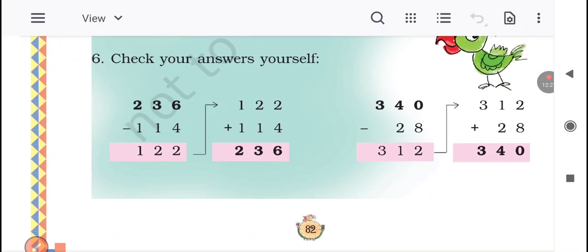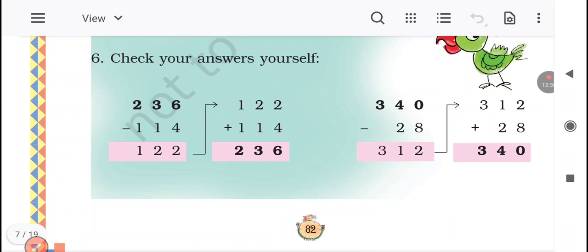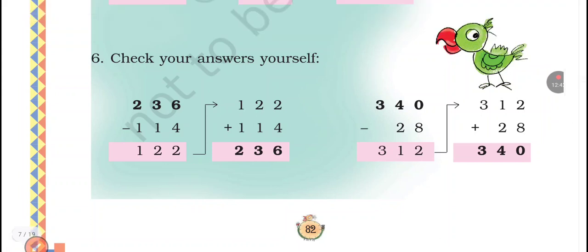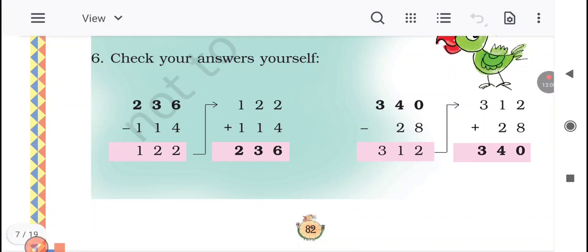236 minus 114. So here if you subtract, 6 minus 4 is equal to 2, 3 minus 1 is equal to 2, 2 minus 1 is equal to 1. 122. How can we check? You will write the big number first, which is the answer, then add. 122 plus 114. 2 plus 4 is equal to 6, 2 plus 1 is equal to 3, 1 plus 1 is equal to 2. 236. Same thing you will find in the next sum.